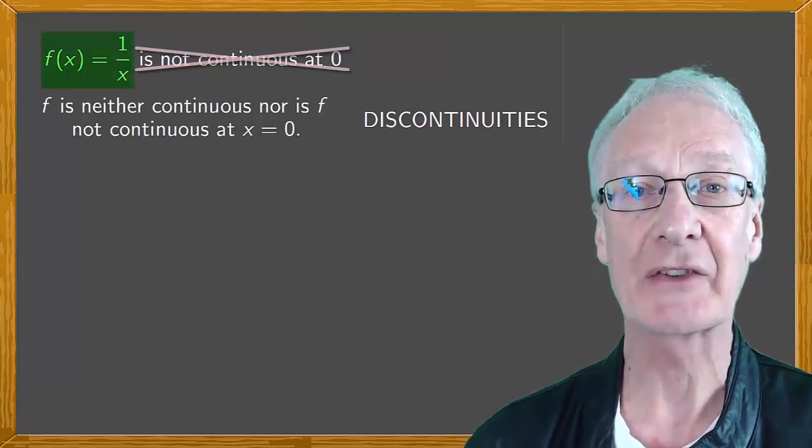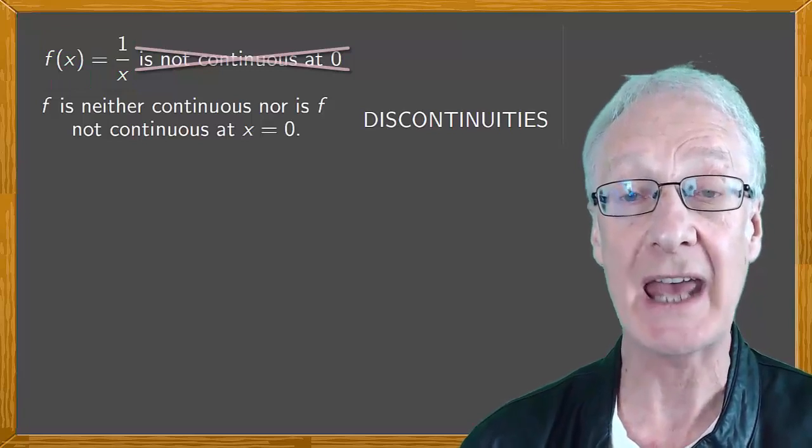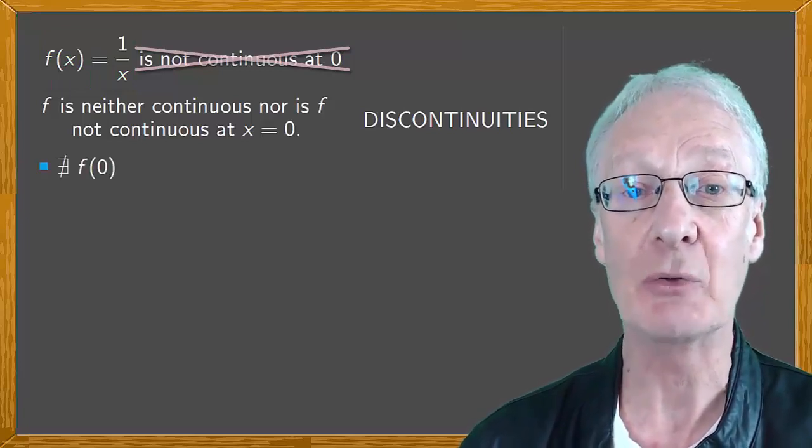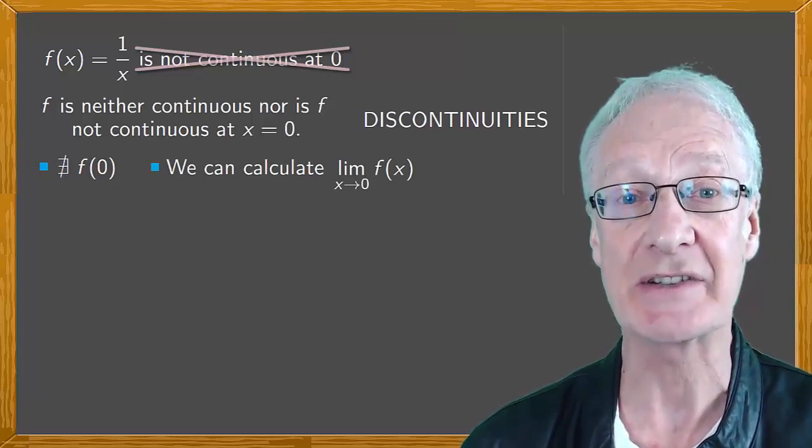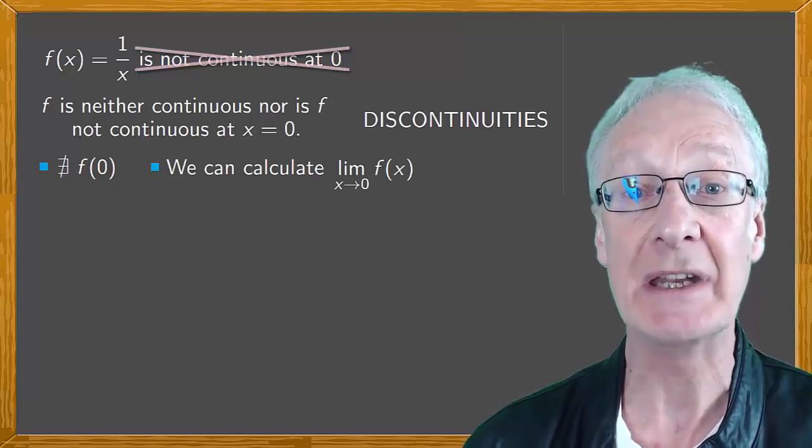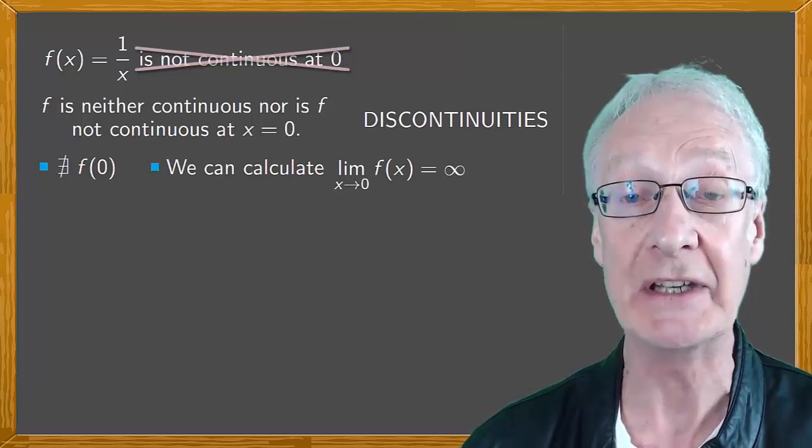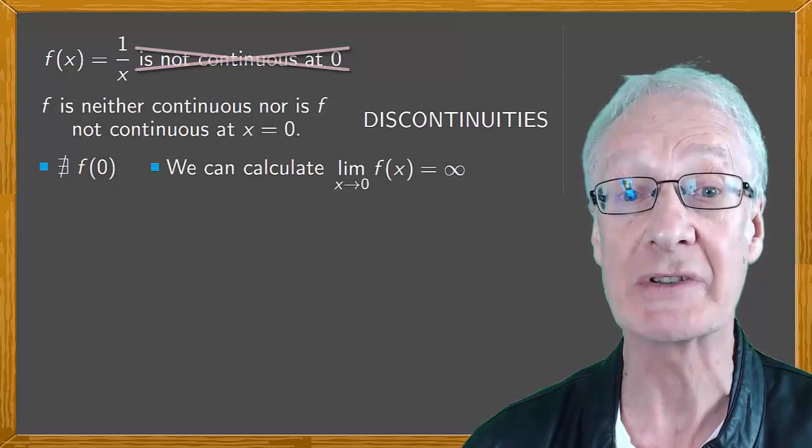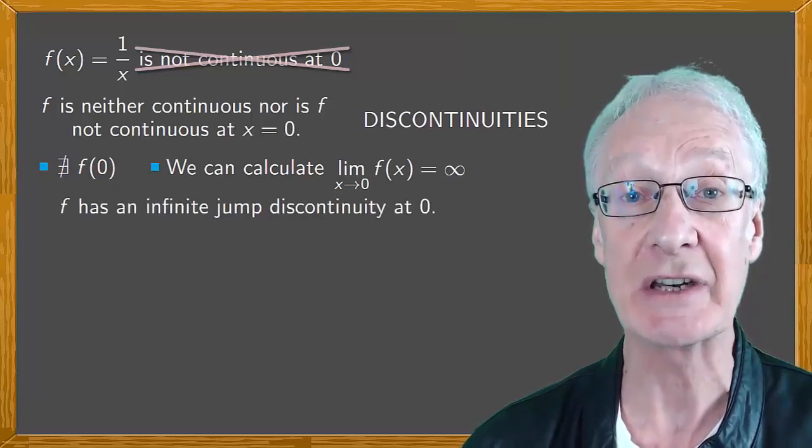In the case of f(x) equals one over x, we can't calculate f at zero, but we can calculate the limit of f(x) as x tends to zero. Since that limit is infinite, negative infinity or infinity depending on how we approach zero, f has an infinite jump discontinuity at zero.